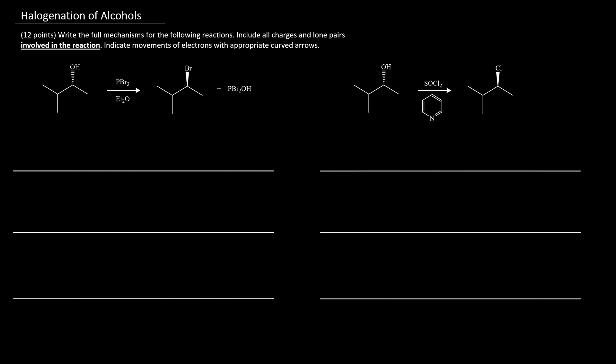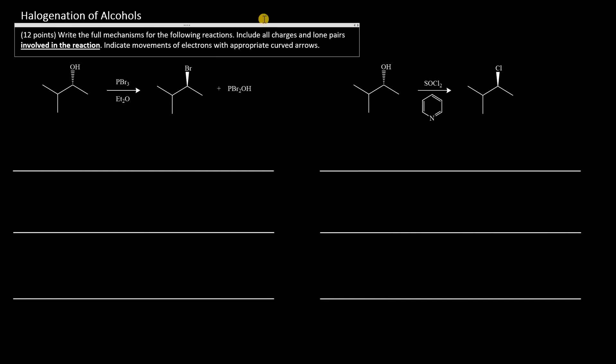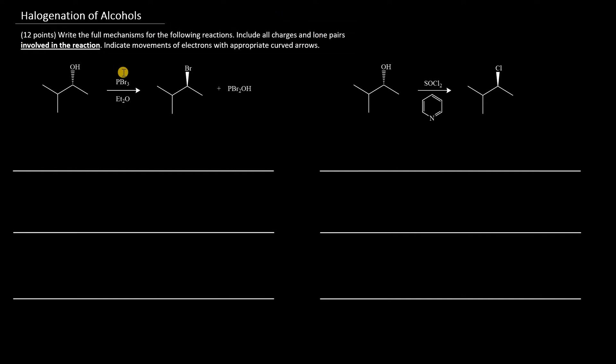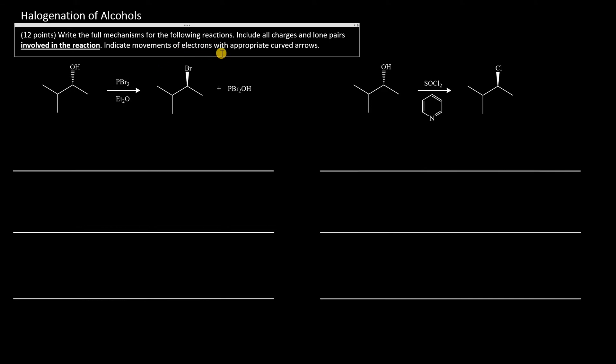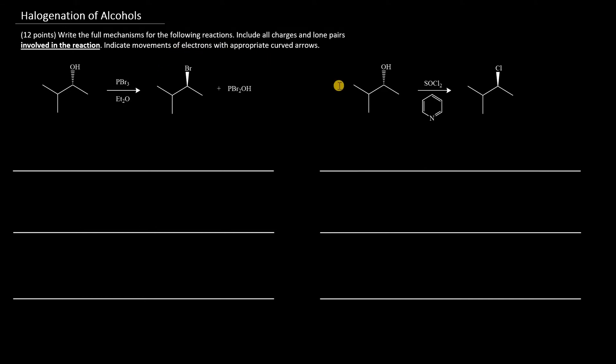Exam review question related to halogenation of alcohols. Write the full mechanisms for the following reactions, including all charges and the lone pairs involved in the reaction. Indicate movements of electrons with appropriate curved arrows.